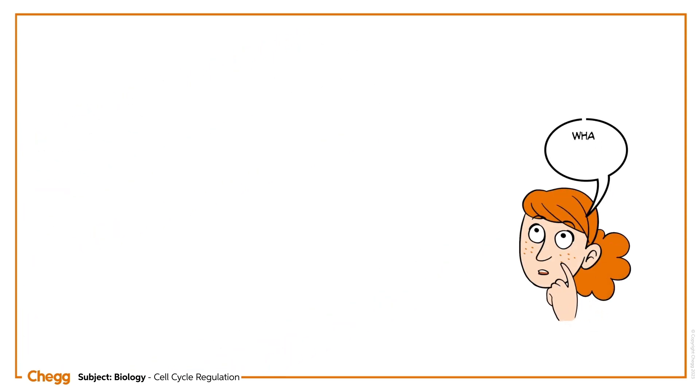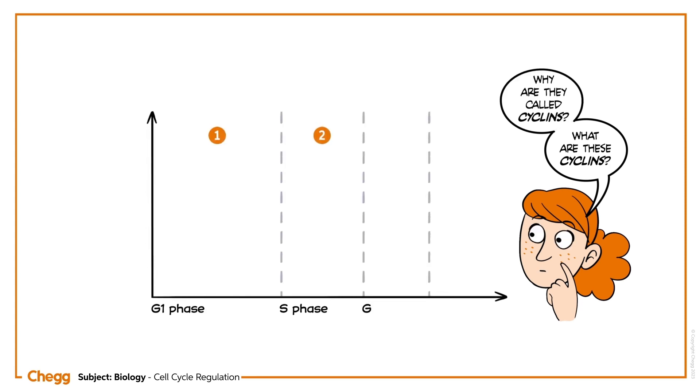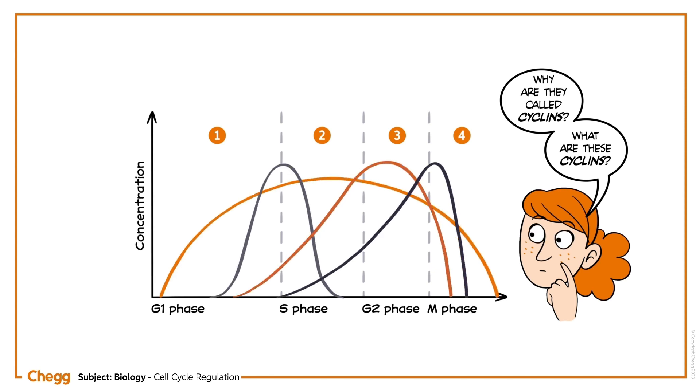You must be wondering what these cyclins are and why they are called so. They are called so because they have a cyclic box structure and their concentrations vary cyclically.